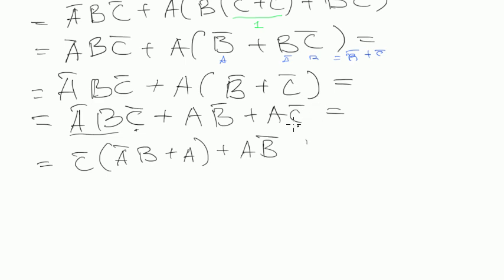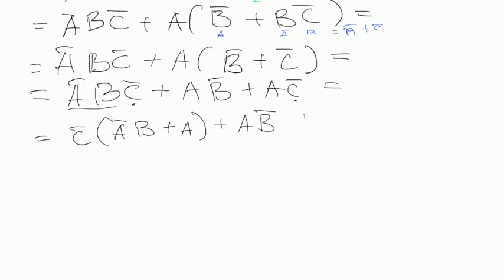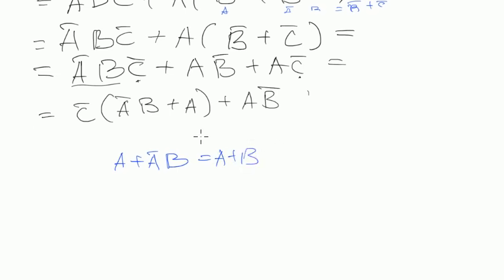We can again apply our handy rule, the last one that says A plus A̅B equals A plus B. In this case it's exactly the same one. So we can write C̅ multiplied by A plus B, plus AB̅.